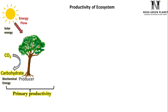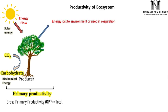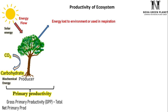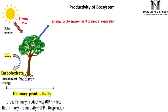The total organic matter stored in plants can be called gross primary productivity, or GPP. Out of this GPP, a portion of energy is lost to the environment or used in respiration by plants. Net primary productivity is the actual primary productivity — the total stored organic matter in plants after removing the respiratory loss. It is equal to GPP minus respiratory loss.